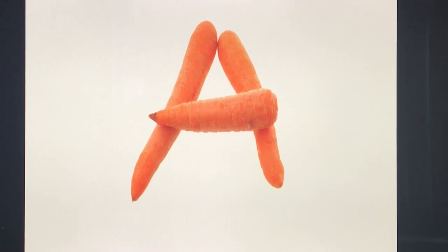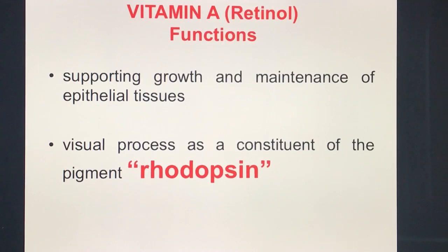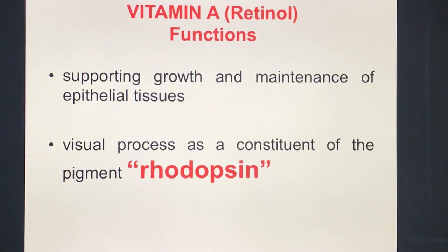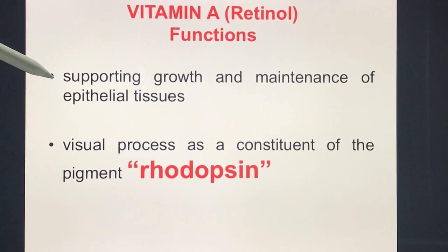A visual mnemonic: carrots forming the letter A, because one of the best sources of beta-carotene and Vitamin A is carrots — you might add squash or calabaza. The first and most important function of Vitamin A is its role in the visual process: Vitamin A is a constituent of the visual pigment rhodopsin. It also supports the growth and maintenance of epithelial tissues.